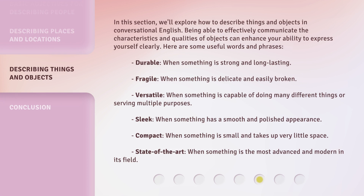In this section, we'll explore how to describe things and objects in conversational English. Being able to effectively communicate the characteristics and qualities of objects can enhance your ability to express yourself clearly. Here are some useful words and phrases. Durable — when something is strong and long-lasting. Fragile — when something is delicate and easily broken. Versatile — when something is capable of doing many different things or serving multiple purposes.